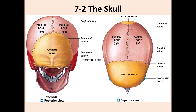From the superior view, you can see the two parietal bones separated from each other by the sagittal suture. These two parietal bones are also separated from the frontal bone by the coronal suture, and from the occipital bone by the lambdoid suture.